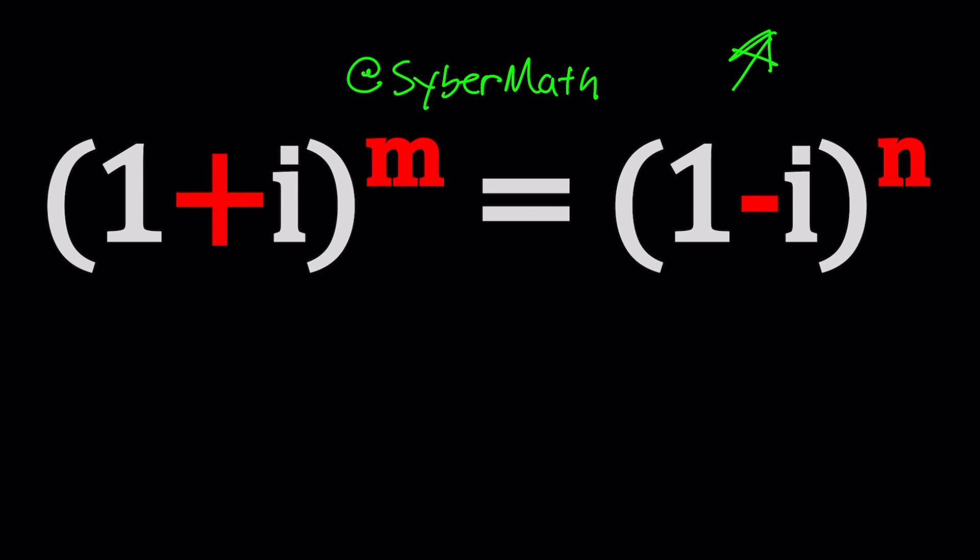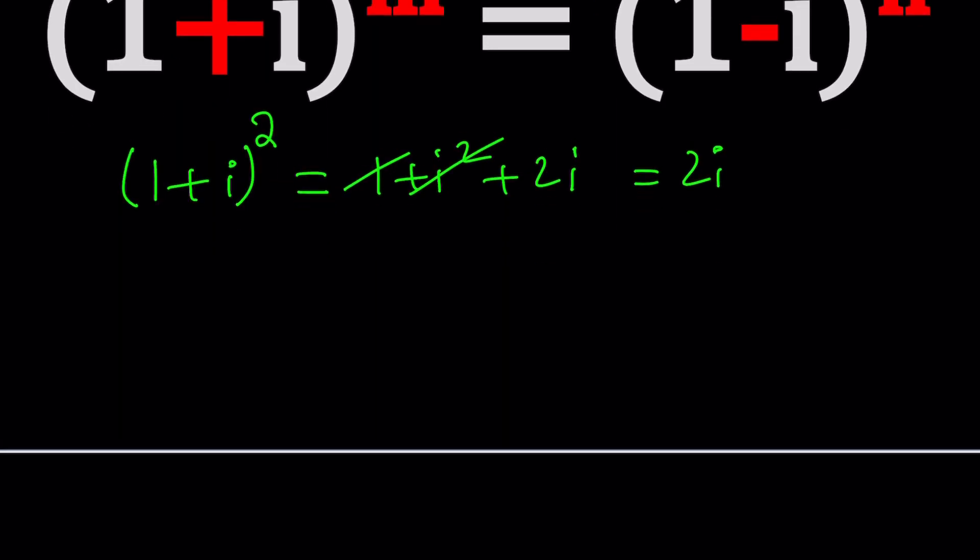So here's what we're going to do first. We're going to look at some maybe special cases. Do you know anything special about 1 plus i? Yes, you should know this. And I'm just going to show you 1 plus i. You can easily apply it to 1 minus i. Similarly, okay? So if you take 1 plus i and square it, you can go ahead and write it as 1 plus i squared plus 2i, but i squared is negative 1, so you get 2i.